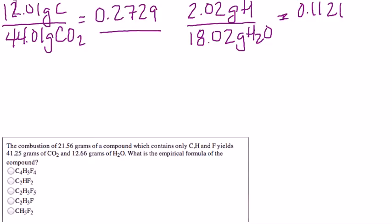Then for hydrogen, remember there are two hydrogens in every water. 2.02 grams of hydrogen divided by 18.02 grams of water gives you 0.1121. Every time that's the amount of hydrogen or the percentage of hydrogen in water.